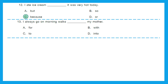Question 13: 'I always go on morning walks dash my mother.' The options are for, with, to, or into my mother. The suitable preposition is 'with' because it indicates that the subject accompanies her mother on her morning walks. Option B, 'with,' is the right answer.